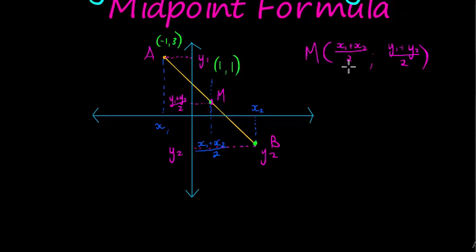I know that negative 1 plus X2 divided by 2 must equal 1. In other words, we already have the midpoint. We already have this whole expression's value. That should be 1. What we're looking for is X2. For Y2, same thing.